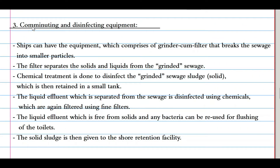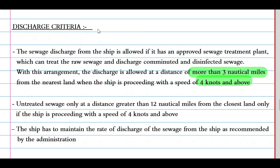The third method is comminuting and disinfecting equipment. A ship can have equipment comprising a grinder-cum-filter that breaks sewage into small particles. The filter separates solid waste from the ground sewage. Chemical treatment is done to disinfect the ground sewage sludge, which is then retained in a small tank. The liquid effluent, separated and disinfected using chemicals and passed through fine filters, is free from solids and bacteria and can be reused for flushing toilets. The solid sludge is given to a shore reception facility.